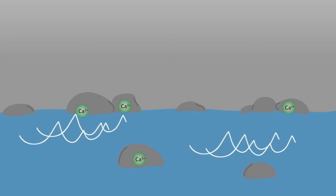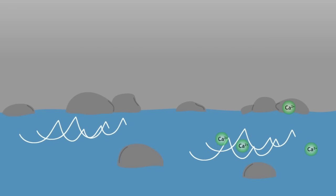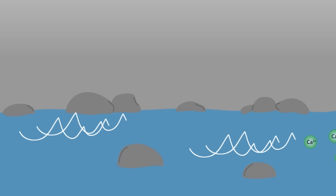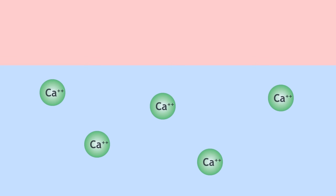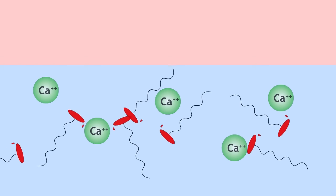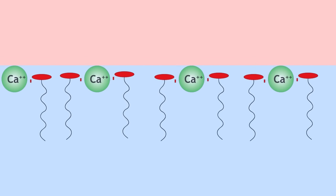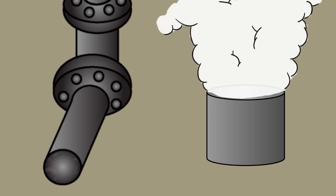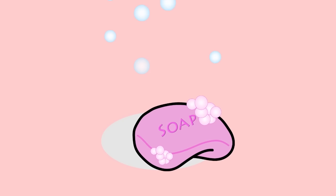To summarize: water becomes hard by flowing through rocks containing calcium salts, and these react with soap to form a scum of calcium stearate, making it difficult to use the soap. Temporary hard water forms deposits of lime scale when heated, but rainwater is soft and lathers easily with soap since it's free of dissolved salts.